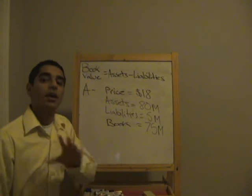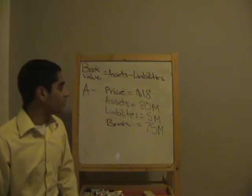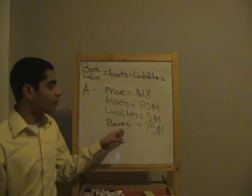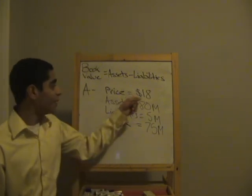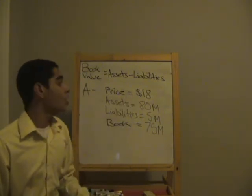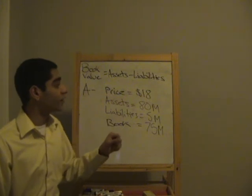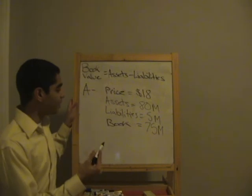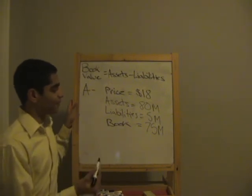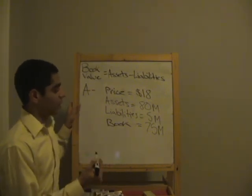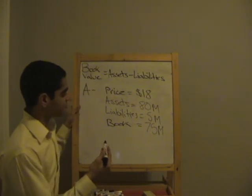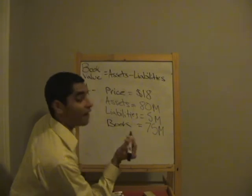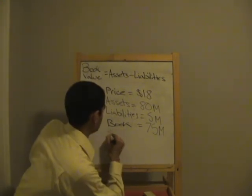This figure alone doesn't really tell us much when we're looking at a price per share of $18. The book value for the entire company doesn't tell us much, so what we want to do is convert this book value to a per-share figure as well — because we're not paying $18 for the entire company, we're paying $18 for one share.